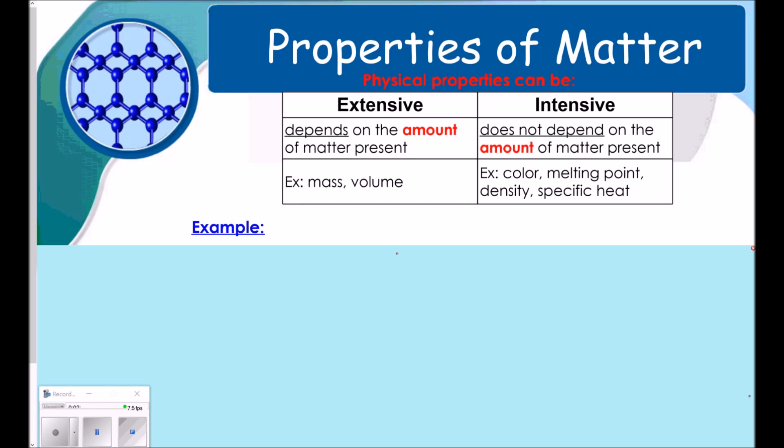Intensive does not depend on the amount of matter present. These are constants for that particular substance. So, for example, things like color, melting point, and density are constants or intensive properties. So, here's another example I have for you.